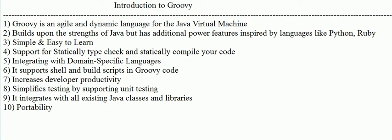Groovy also has additional features inspired by languages like Python and Ruby. These work on scripting or script-based object-oriented programming. On top of Java features, it provides additional capabilities from other object-oriented languages like Python, Ruby, and Smalltalk, integrated so that it simplifies your development efforts and allows you to deliver software very fast with modern programming capabilities.